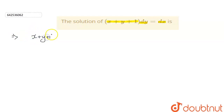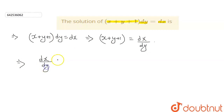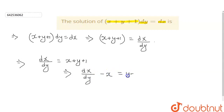Let's see how we can do that. We have x + y + 1, dy = dx. We can rewrite this equation as x + y + 1 = dx/dy. So the equation looks like dx/dy = x + y + 1, which means dx/dy minus x = y + 1.